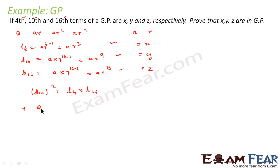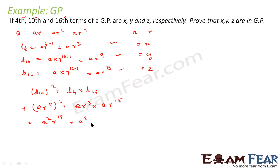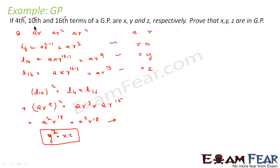So T10² = (ar⁹)² equals T4 · T16 = ar³ · ar¹⁵. We get that (ar⁹)² = a²·r¹⁸, and ar³ · ar¹⁵ = a²·r¹⁸. Therefore T10² = T4 · T16, which means y² = xz.